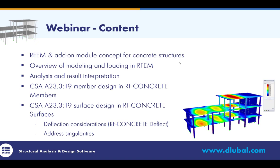Regarding the content over the next hour: I'll give a brief overview of RFEM, our main finite element analysis program, and the add-on module concept for concrete structure design. Then we'll move into our example — a brief overview of modeling and loading within RFEM, running an analysis, and viewing results. Then we'll cover RF Concrete Members for member design including columns and beams per CSA A23.3 2019, followed by RF Concrete Surfaces for slabs and walls. Within RF Concrete Surfaces we'll consider deflection checks using RF Concrete Deflect, and finally I'll show how to address singularities in FEA.